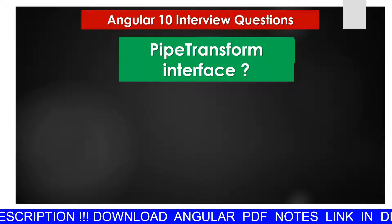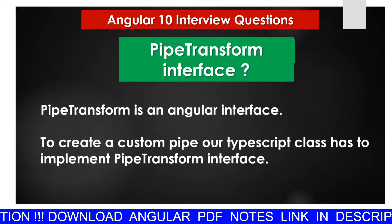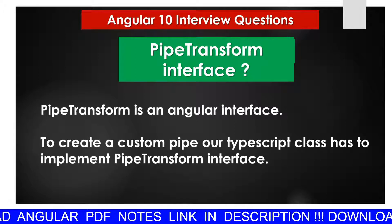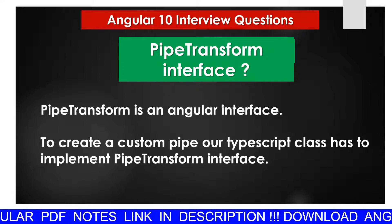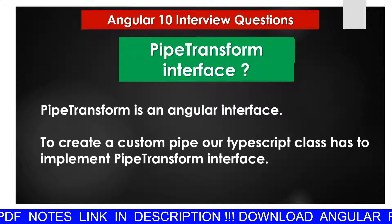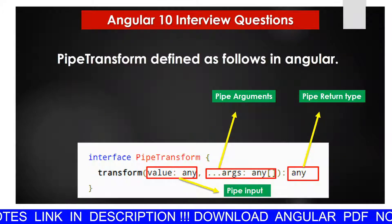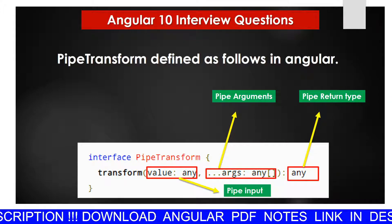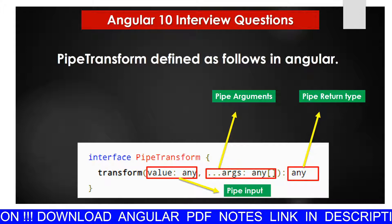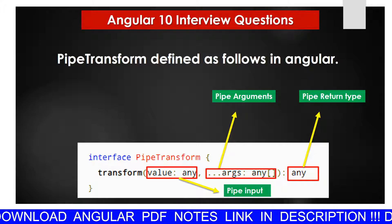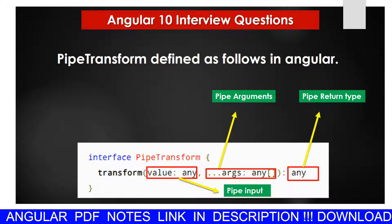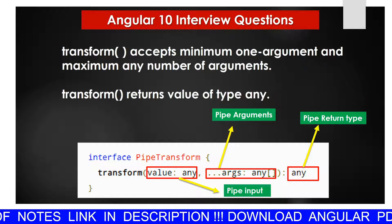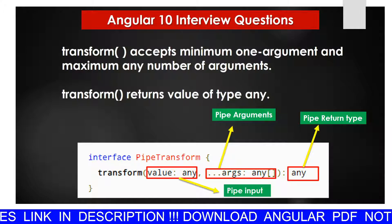Next question: what is the PipeTransform interface? PipeTransform is an Angular interface used to create a custom pipe. Our TypeScript class has to implement the PipeTransform interface. It is defined with a transform method that has two parameters — pipe input and pipe arguments — and a return type of 'any'.